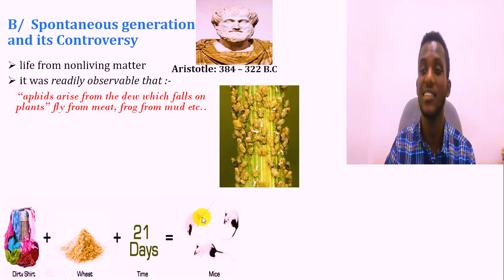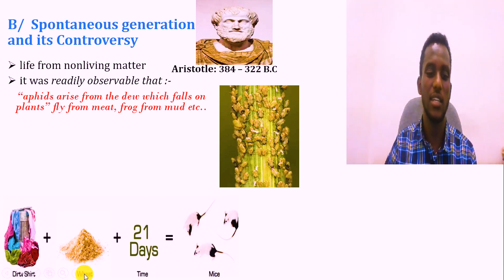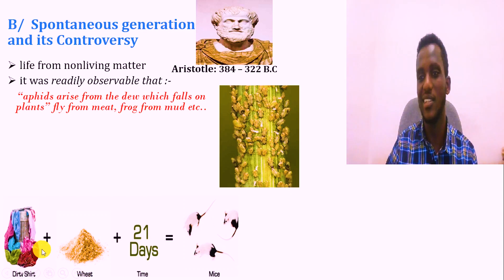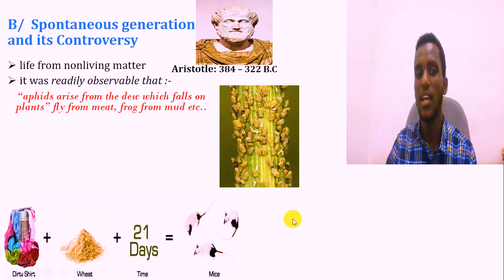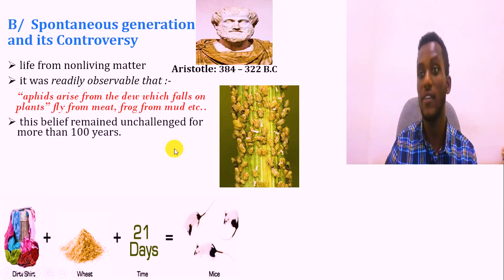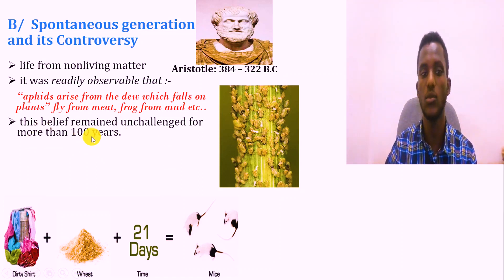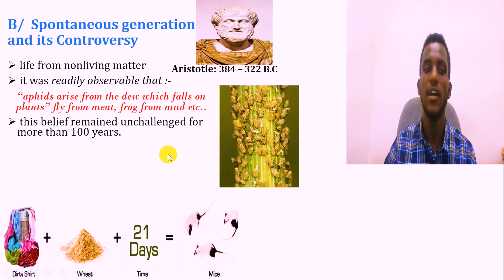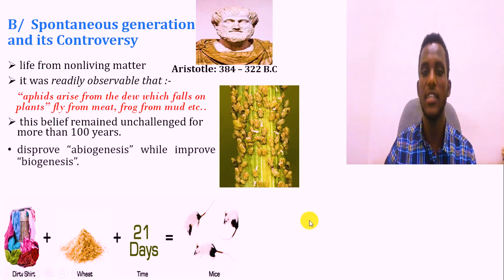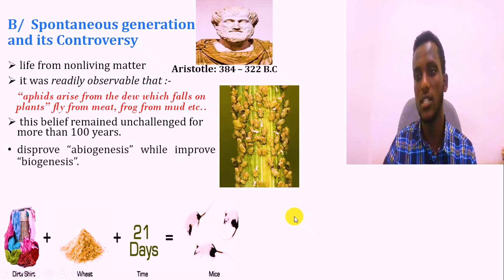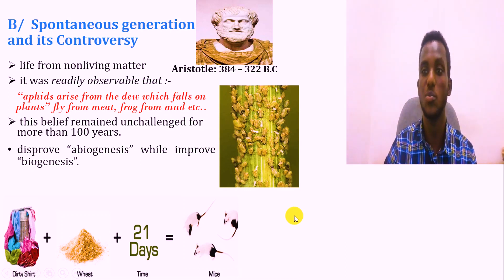The rat was considered a living thing, while wheat and dirty clothes are not living — yet it was believed a living organism could arise from them. Actually, this theory was dominant over 100 years ago. The first scientist known as Francesco Redi was able to disprove the theory of spontaneous generation, also called abiogenesis.